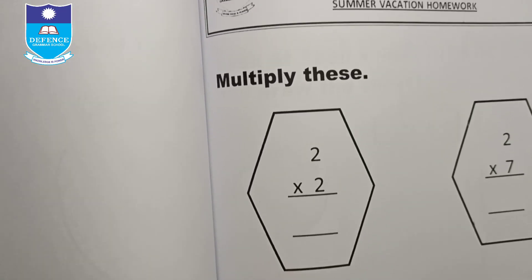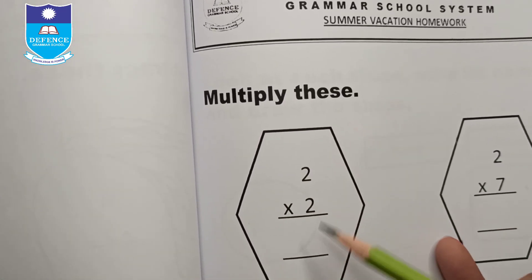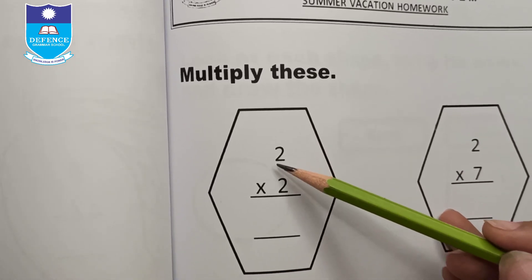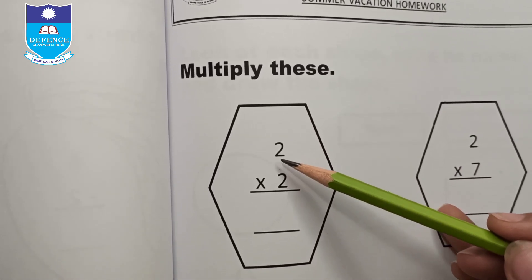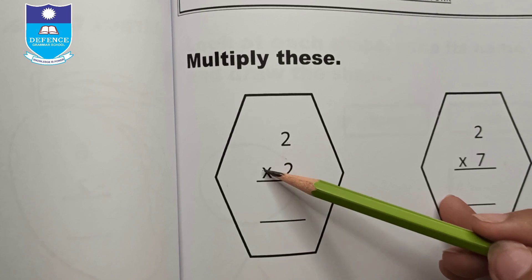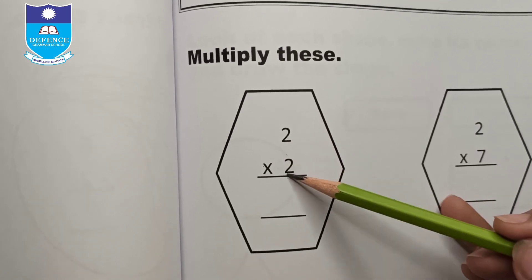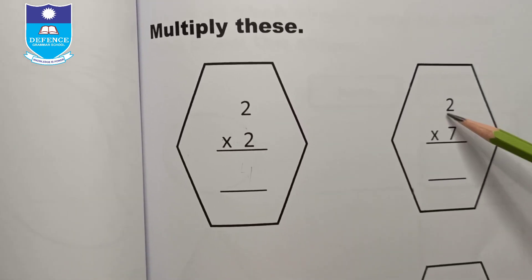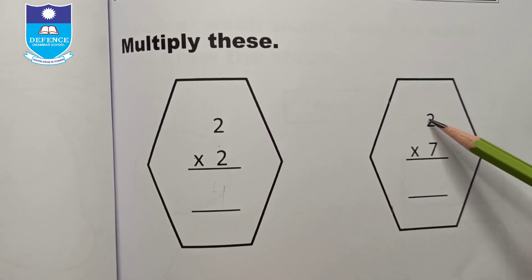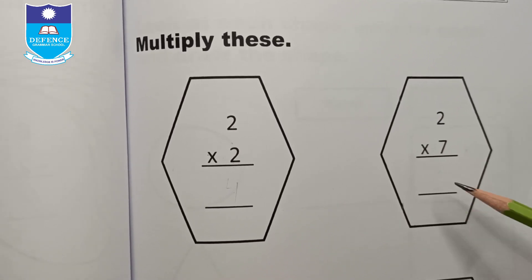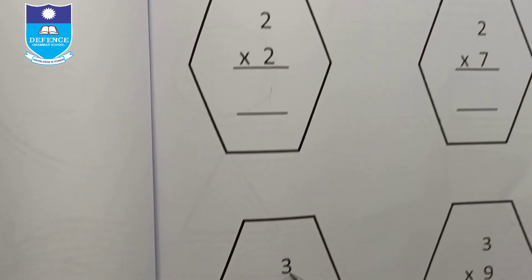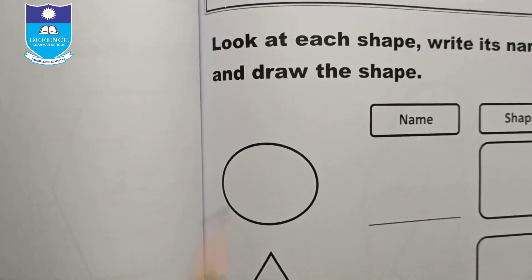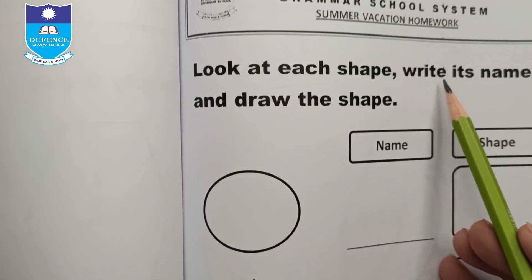Multiply these numbers. For example, 2 times 2 equals 4 — write 4. Two times 7 equals 14. Similarly, write the answers for: 3 times 5 equals 0, and the other given multiplication problems.